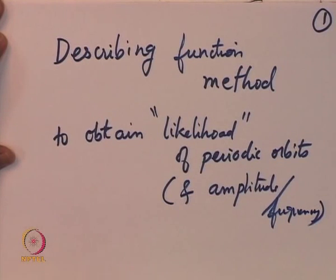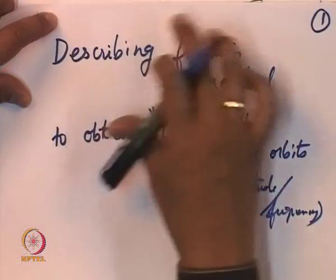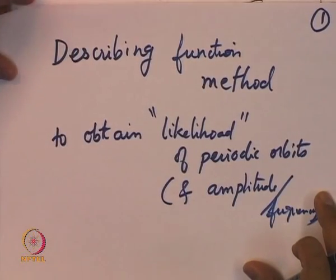This is in continuation of what I mentioned at the very start of this course: we need nonlinear systems for sustained oscillations, for robust sustained oscillations. We will see an example of how nonlinear systems can achieve this, and the technique used for finding the amplitude and frequency goes through this particular method called the Describing Function method.